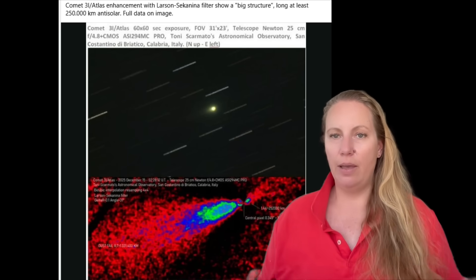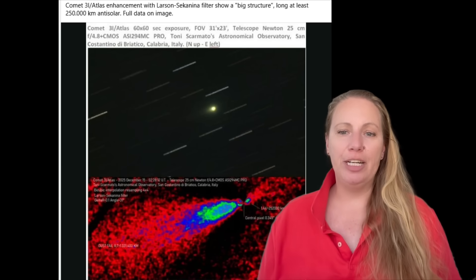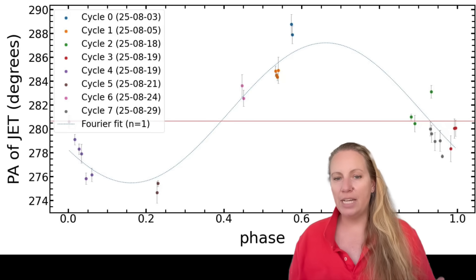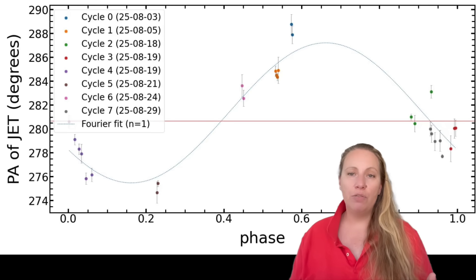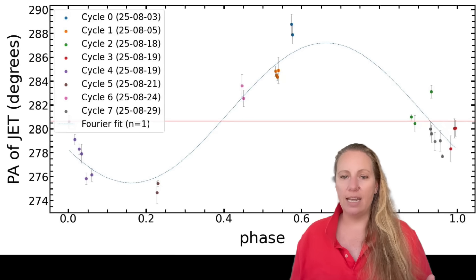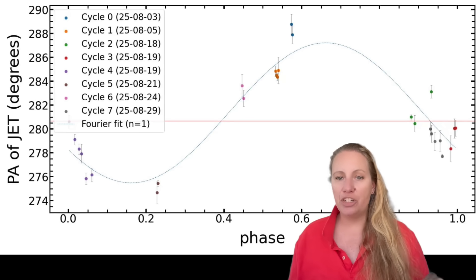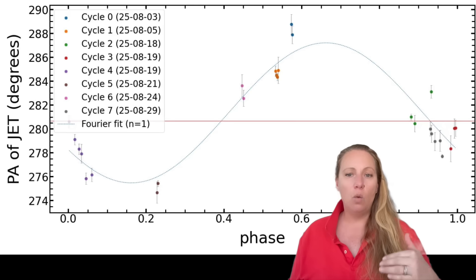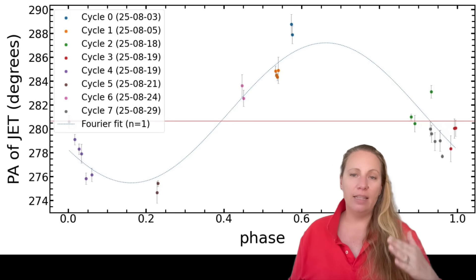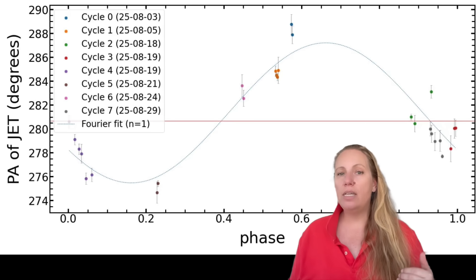Let me walk you through this because the idea sounds technical, but it's actually simple once you picture it. I'm going to show you this graph here. It shows the direction of the anti-tail jet over time. Anti-tail here means a narrow feature that appears to point towards the sun in the image. They measured that anti-tail direction at a projected distance of 6,000 kilometers from the brightest part of 3i Atlas, that's 3,700 miles.